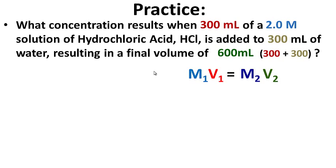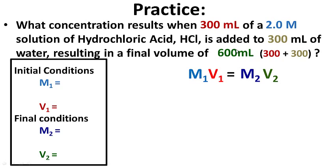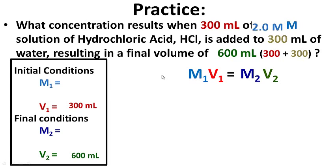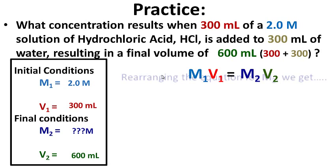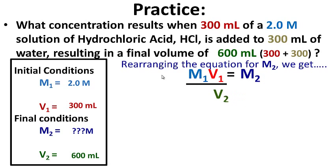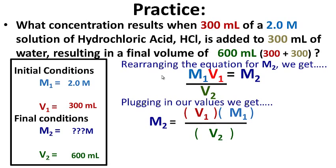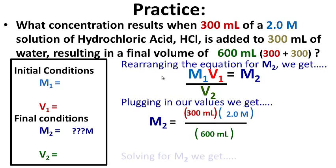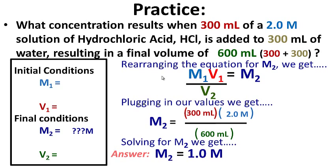Let's see how you did. The final volume is 600 milliliters. We're starting with a volume of 300 milliliters and a two molar solution. Solving for M2: M2 = (M1 × V1) / V2 = (2 molar × 300 mL) / 600 mL = one molar solution. Hopefully you got that right.